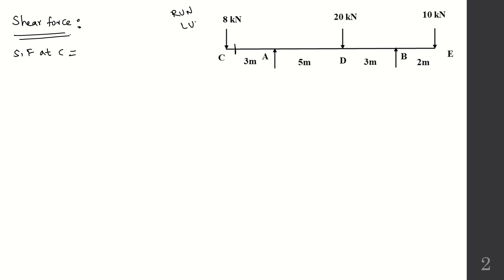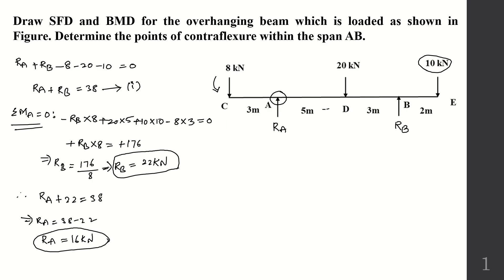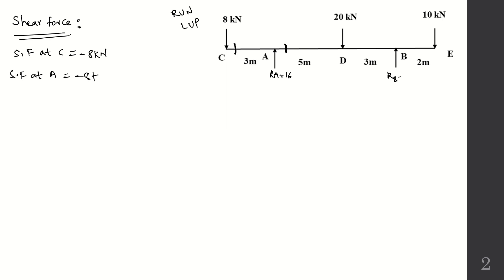Left side upward is positive, left side downward is negative. Shear force at A: to the left we have −8 kN (downward) plus RA = +16 kN (upward), so shear force at A = −8 + 16 = +8 kN. RA = 16 kN and RB = 22 kN.